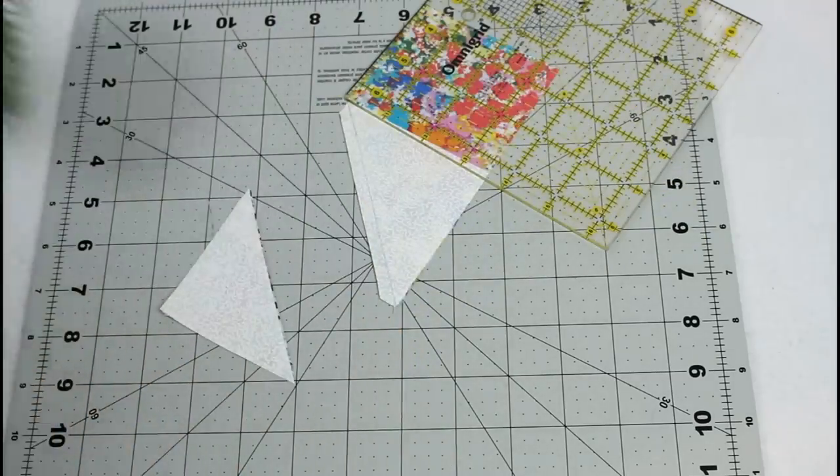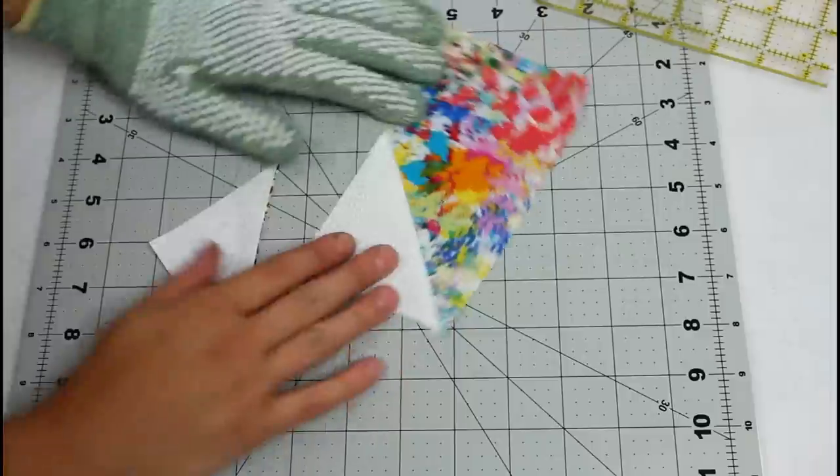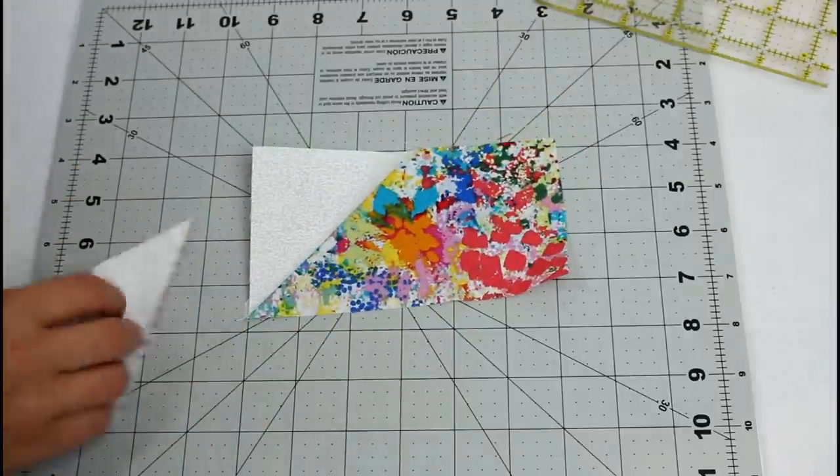If you're unsure where to cut, flip the white bit up to check and then trim away the two layers that are underneath that flipped up part.